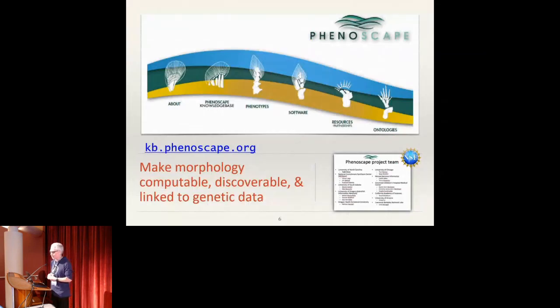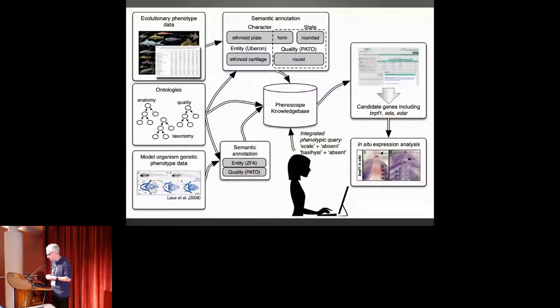So the Phenoscape project tackles some of these challenges that started back in 2007 with a mission to make morphology computable, discoverable, and linked to genetic data. I'm not going to talk today about genetic data at all, but really since the last few years, we've focused most of this work, and this tool that I'm presenting is so far chiefly aimed towards addressing the morphology site and making access and adoption of the morphology data easier.